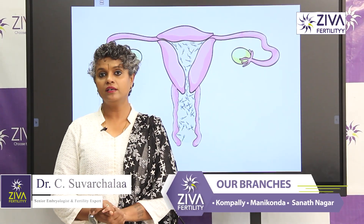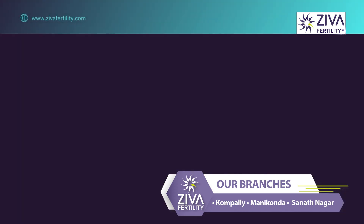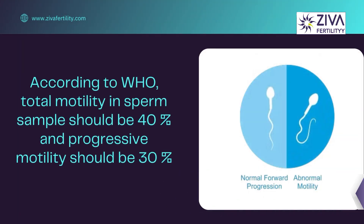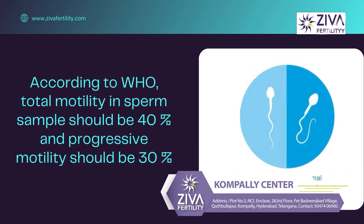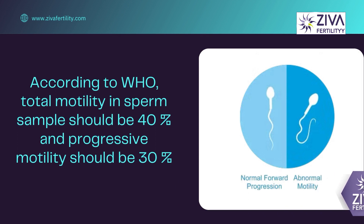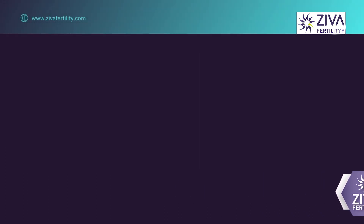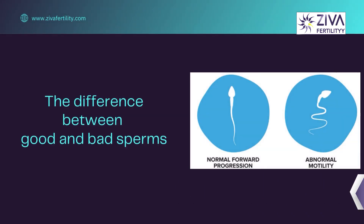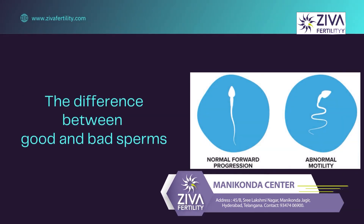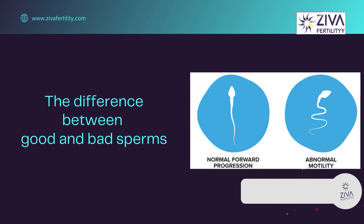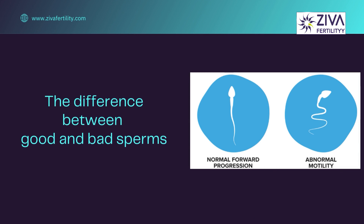According to WHO standards, the total motility in a sample should be at least 40%, of which progressive motility should be 32%. What is progressive motility? Any sperm that moves forward and is motile is termed as progressively motile sperm. Sperms that are twitching but not moving forward — you can make out they're alive — are called non-progressive sperms.